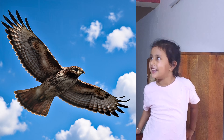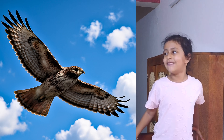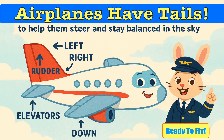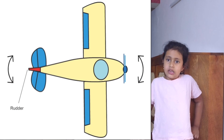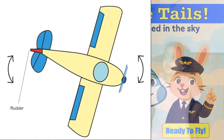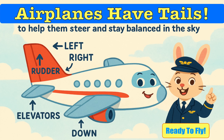Why do airplanes have tails? You have seen birds — they also have tails, which help them fly and wiggle. In the same way, airplanes have tails to help them stay balanced in the sky. It also helps them steer — to turn left, turn right, go up, come down. At the end of the tail there is a rudder, and that helps the aeroplane to turn in the air, guiding the plane left, right, up or down, so it flies smoothly and safely.